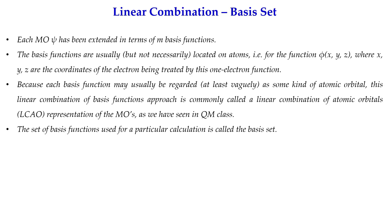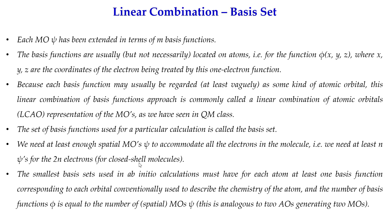Since we cannot take only a single basis function, we take a set of basis functions, and that set for a particular calculation is called the basis set. How many basis functions do we need? We need at least enough to accommodate all the electrons: at least n basis functions (or n spatial MOs) for 2n electrons, since each orbital holds two electrons. In ab initio calculations, the smallest basis set requires at least one basis function for each atomic orbital of each atom.